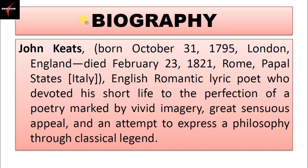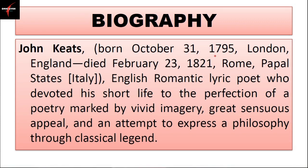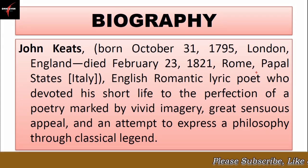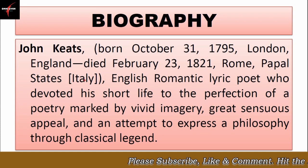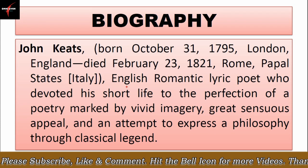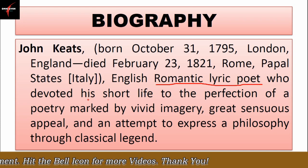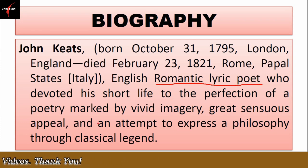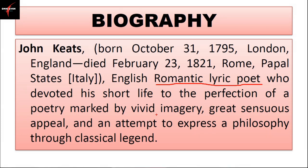Let us learn a few things about John Keats. John Keats was born on October 31st, 1795 in London, England and he died on February 23rd, 1821 in Rome, Papal States, Italy. He is an English romantic lyric poet who devoted his short life to the perfection of poetry marked by vivid imagery, great sensuous appeal, and an attempt to express a philosophy through classical legend.